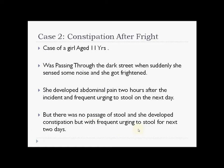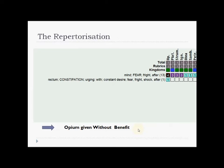Let's move on to the next case: a case of constipation after fright. An 11-year-old girl was passing through a dark street when suddenly she sensed some noise and got frightened. She developed abdominal pain 2 hours after the incident and frequent urging to stool the next day. There was no passage of stool. She developed constipation and frequent urging to go to stool for the next 2 days. There was a dilemma whether to search for fright remedies combined with constipation — we all know Opium works well in fright as well as in constipation with this symptom picture.